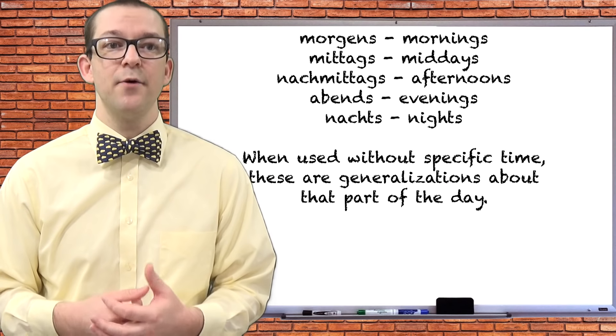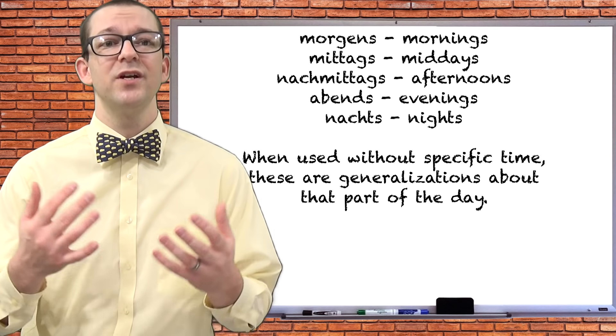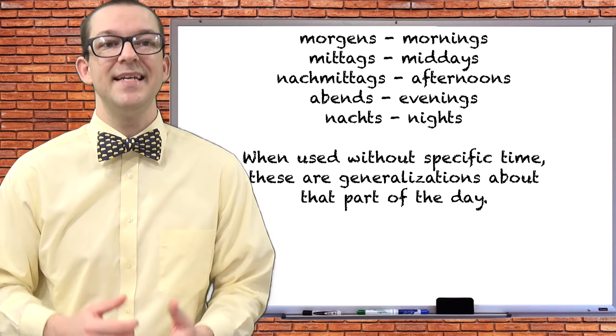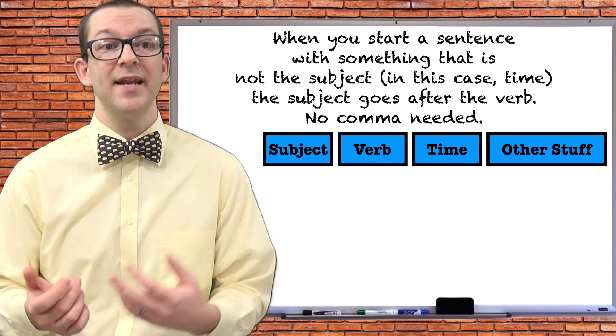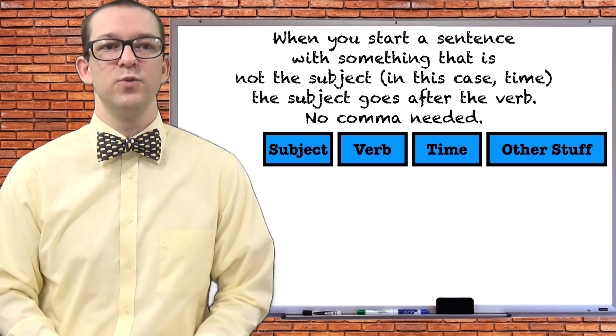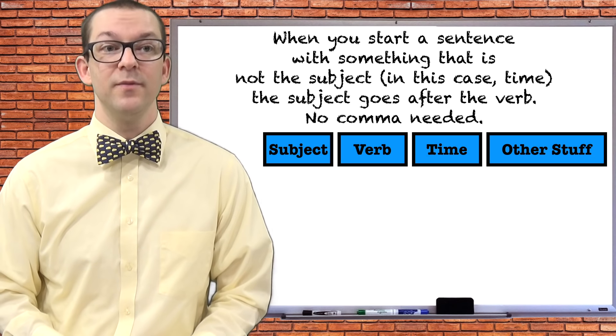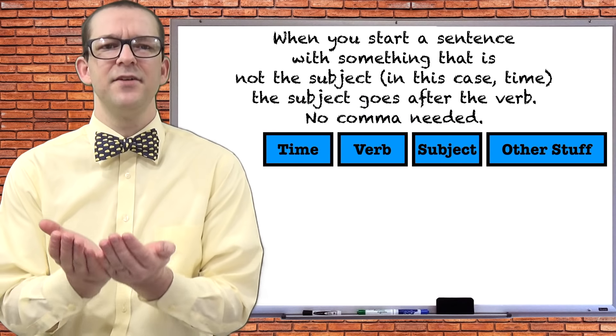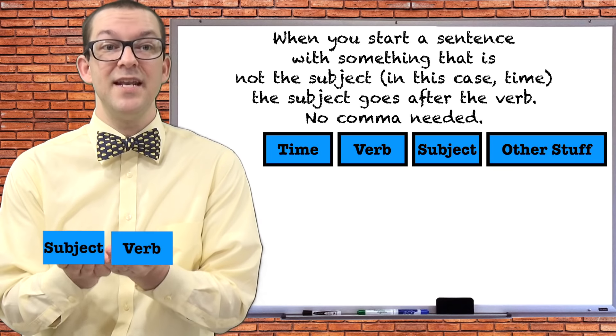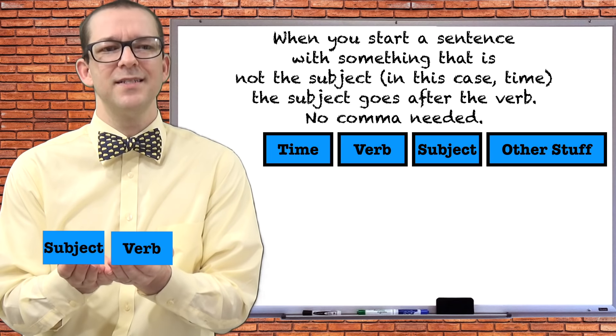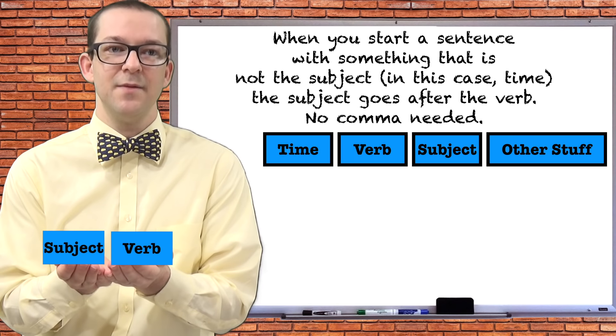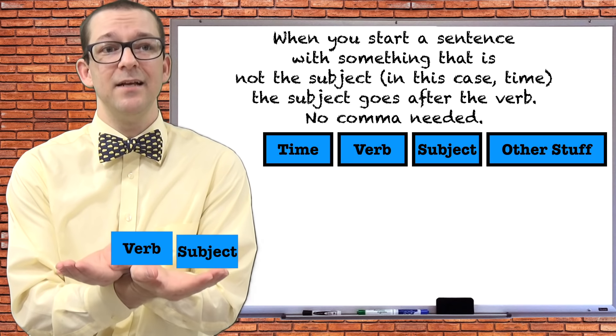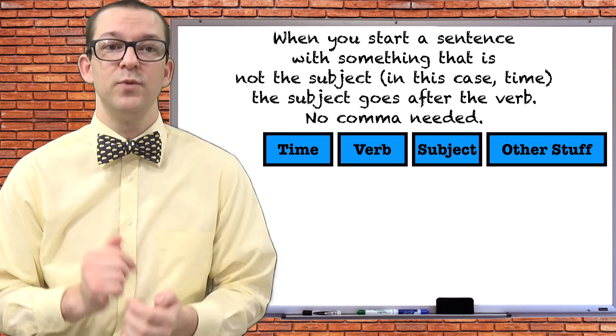If you use these versions without a specific time of the day, it becomes a generalization about that part of the day. These words indicate repeated actions during those times of the day. In both German and English, you can start your sentence with these words. If you do that in German, you need to move the subject to the other side of the verb. I think of it as having the subject and verb attached with a string. They have to be next to each other. So if the first spot is taken by something else, in this case the time element, the subject has to move to the other side. Unlike in English, however, you don't need a comma between the time and the verb.